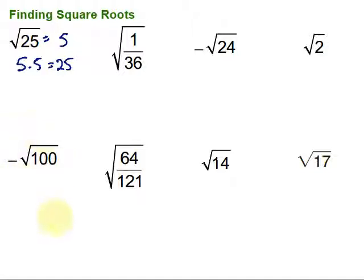All right, then let's take a look at this negative square root of 100. So again, what number when we multiply it by itself gives us 100? That would be 10. 10 times 10 gives us 100.